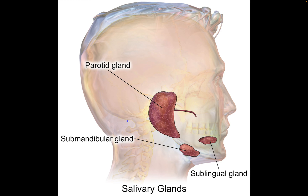Milan category 3 is atypia of uncertain significance. This is when you have cytology that has some atypia, but it lacks either the qualitative and/or quantitative features where you as a cytopathologist are confident enough to call it either neoplastic or non-neoplastic.